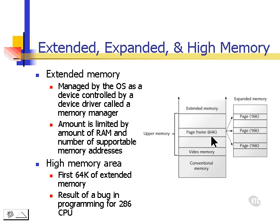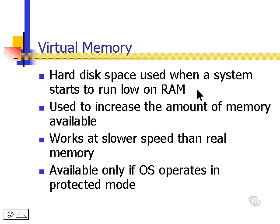We also have memory that is not in physical RAM. This is called virtual memory. Virtual memory is hard disk space that's used when a system starts to run low on RAM. It's used to increase the amount of memory available, but it works at a slower speed than real memory, and it's only available if an operating system operates in protected mode.